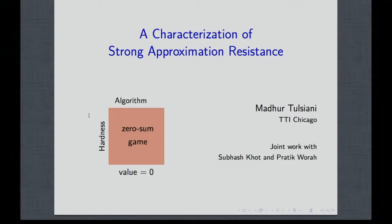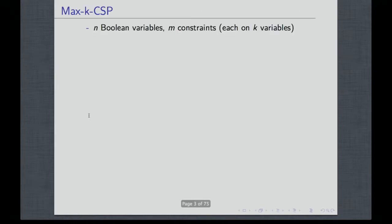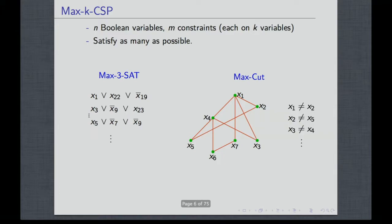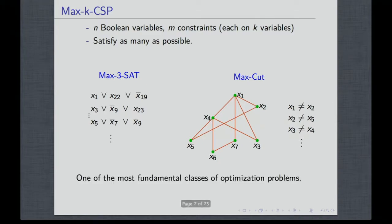Which we call strong approximation resistance, and I'll define the terms as we go along. So first, the basic things: we are talking about KCSPs. You have n Boolean variables, m constraints, and they look like this. So you can have SAT constraints or cut constraints on a graph where you're just saying that the vertices do not get the same label if they share an edge between them, and so on and so forth. This is one of the most fundamental classes of problems.